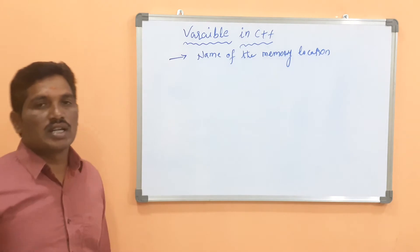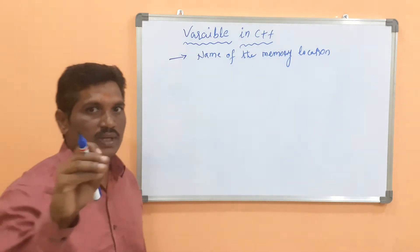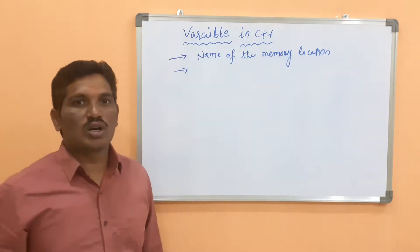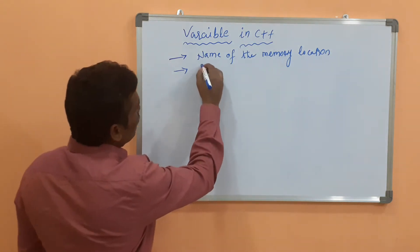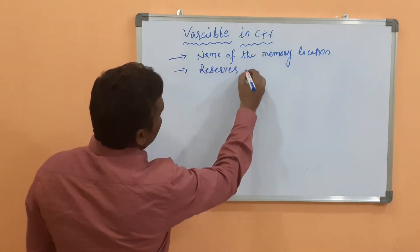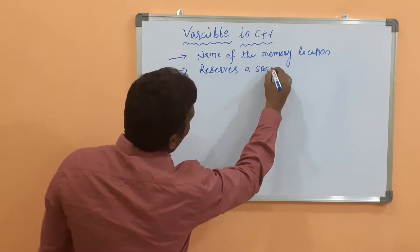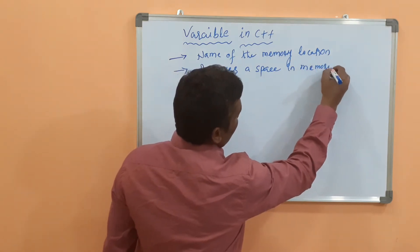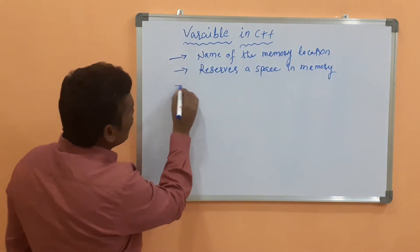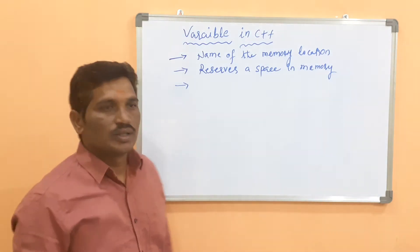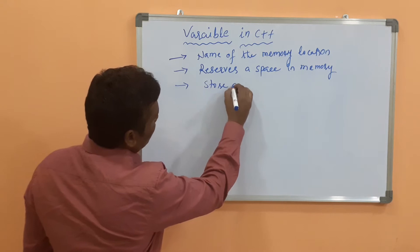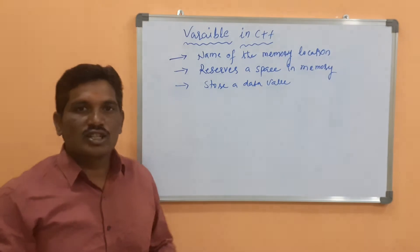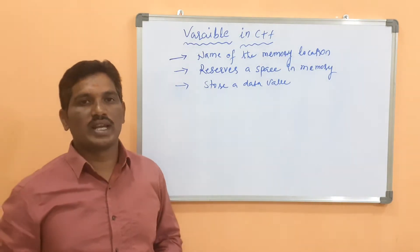Why is it called the name of the memory location? I will explain in detail with an example. It is also called reserving a space in memory. How to reserve a space in memory is based on the data type. The use of a variable is to store a data value. These are some of the definitions of the variable concept.